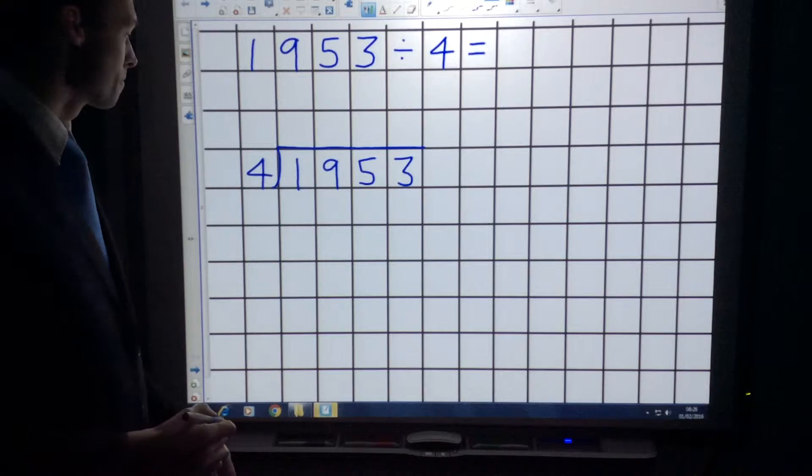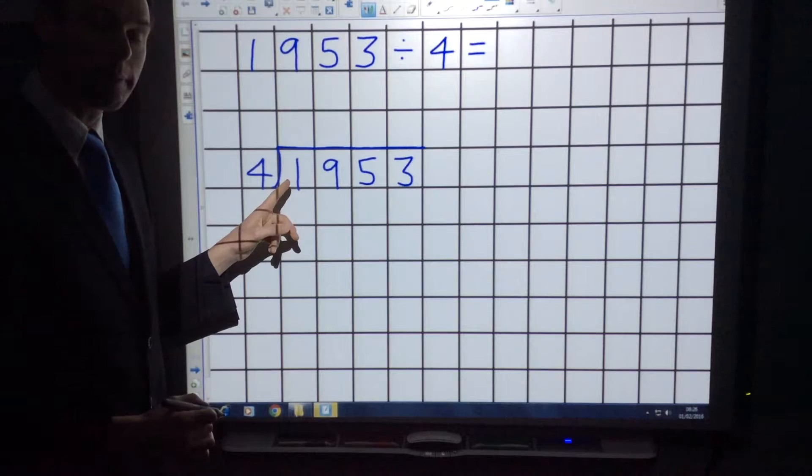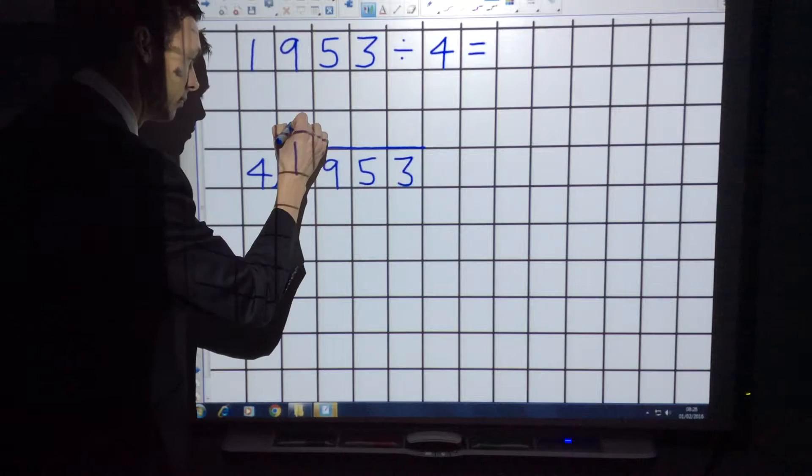In this example, one thousand, nine hundred and fifty-three. Then you begin. You ask yourself, how many times does four go into one? Now we know this is a thousand, but for this method it's easier to think of it as a one.